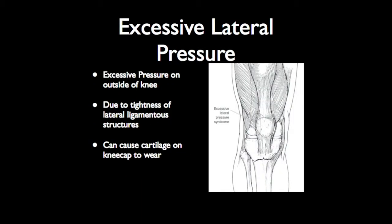Before I get started, I want to talk about this diagram. This is a front view of a knee showing the kneecap. Here are the quad muscles. The left side of the diagram is the lateral side — the outside of the knee. The inside of the knee is the medial. What we're talking about with excessive lateral pressure is that the ligaments supporting the kneecap are excessively tight on the lateral side, and that tightness can cause some wear to the cartilage.